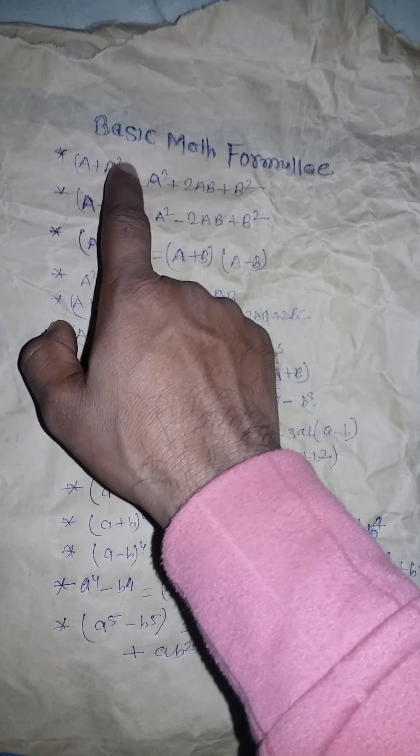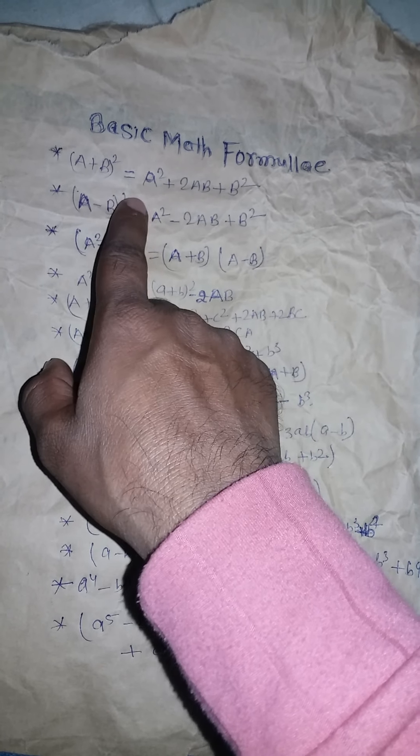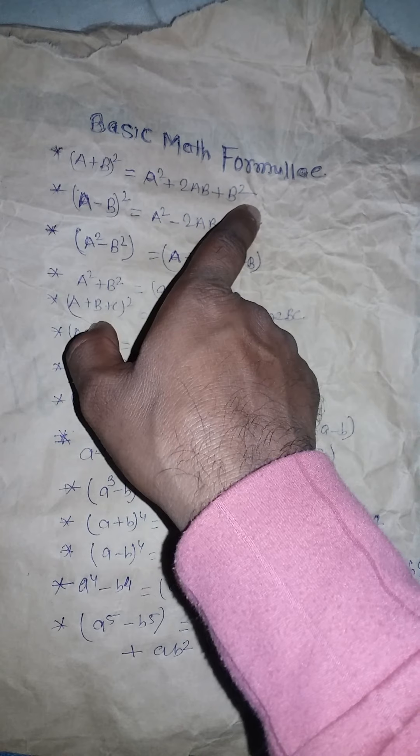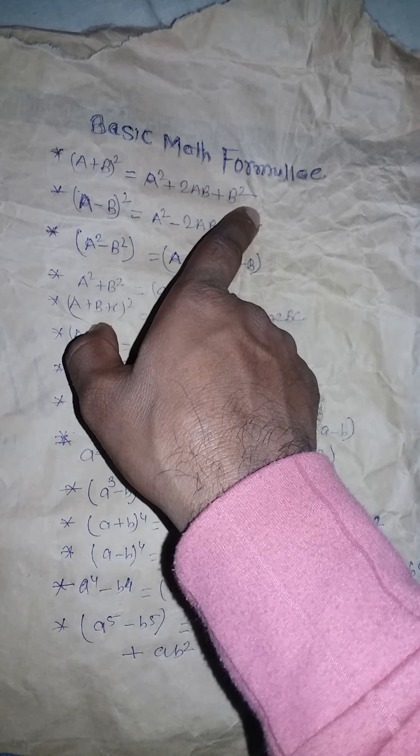a plus b whole square is equal to a square plus 2ab plus b square.